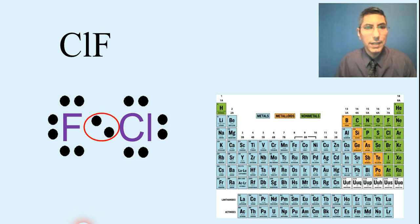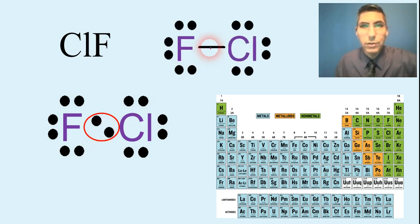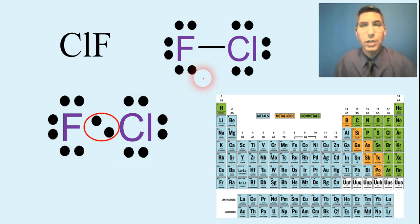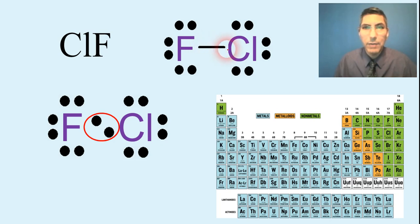That's the Lewis electron dot diagram for ClF. To make it complete, I take the shared pairs and replace them with a line. So here we have our finished Lewis electron dot diagram — sometimes called a structural formula — for chlorine monofluoride. The shared pair between the atoms is replaced with a line representing a single covalent bond being shared between those two atoms.